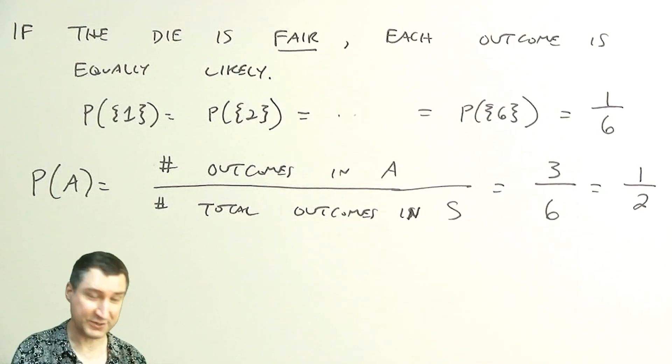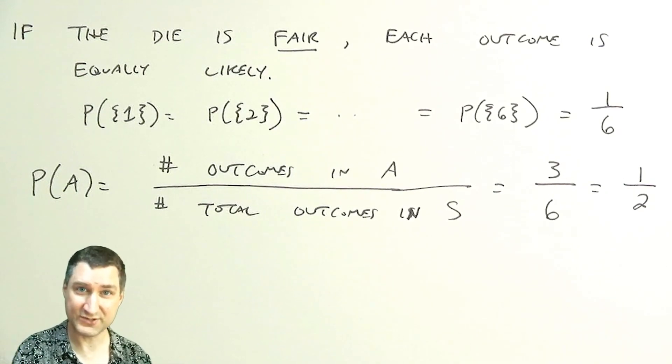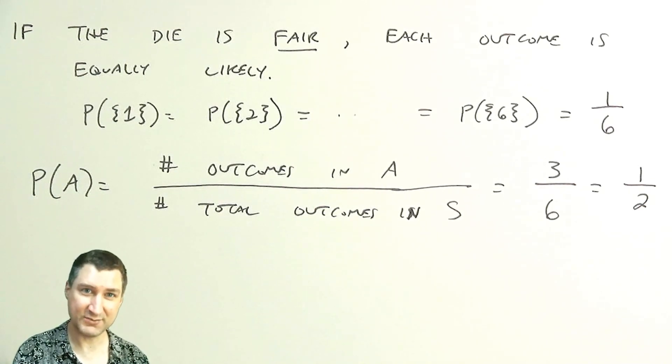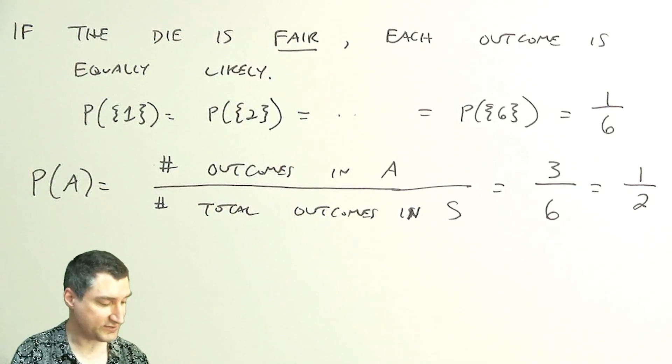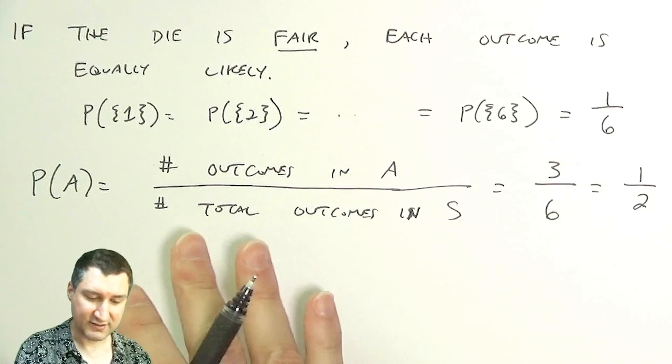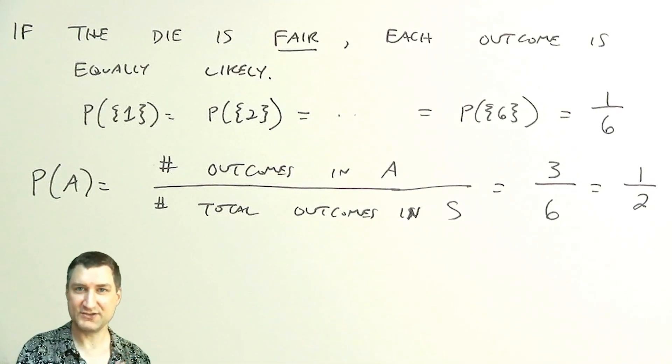Again, this is only true when the die is fair. We're going to talk about situations where not all the outcomes are equally likely, and that's a common mistake in probability—to assume that every outcome is equally likely. We're going to talk about some examples like that in greater detail.